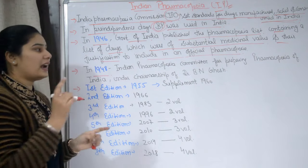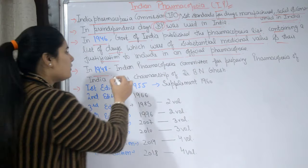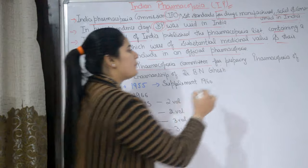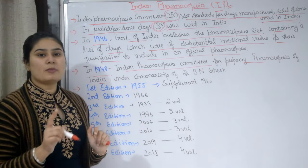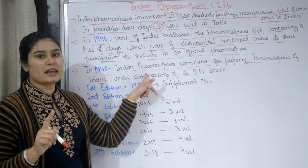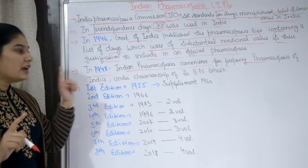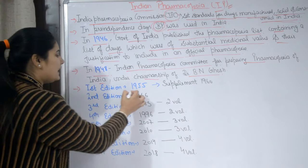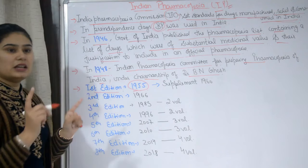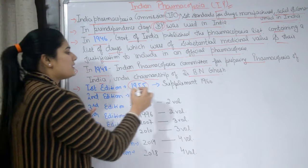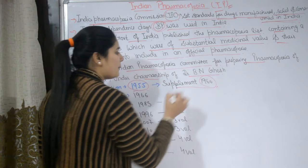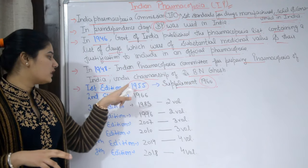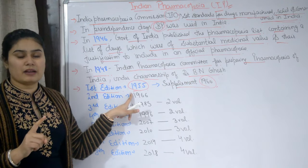In 1948, after independence, a committee called the Indian Pharmacopoeia Committee for Preparing Pharmacopoeia of India was formed to create the Indian Pharmacopoeia. Its chairman was Dr. B.N. Ghosh. Finally, in 1955, the first edition of Indian Pharmacopoeia was published, and its supplement came in 1960 with additional drugs added. So the first official Indian Pharmacopoeia was published in 1955.